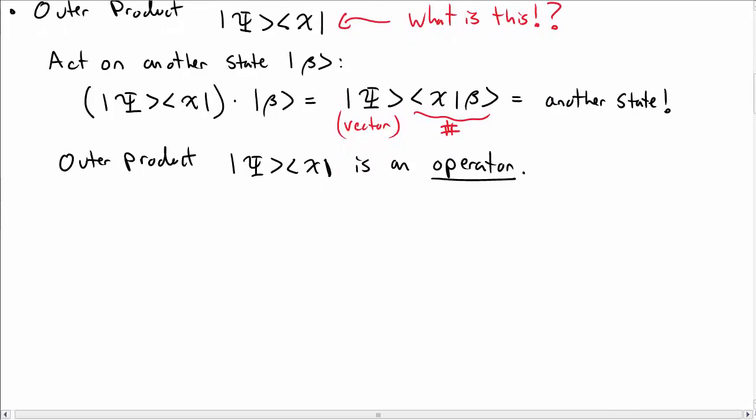I want to talk about one particular outer product that's very useful, and this is called the projection operator. So the projection operator, I'll call it p hat sub n, is I take some stationary states here and I take the outer product between the stationary states. So let me act this projection operator on a general state psi.